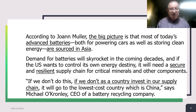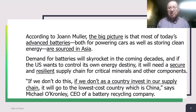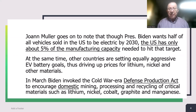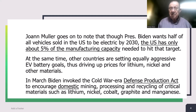According to Joanne Muller, the big picture is that most of today's advanced batteries — both for powering cars and storing clean energy — are sourced in Asia. Demand for batteries will skyrocket in the coming decades, and if the US wants to control its own energy destiny, it will need a secure and resilient supply chain for critical materials and components to make these batteries. President Biden wants half of all vehicles sold in the US to be electric by 2030, but the US has only about five percent of the manufacturing capacity needed to hit that target.